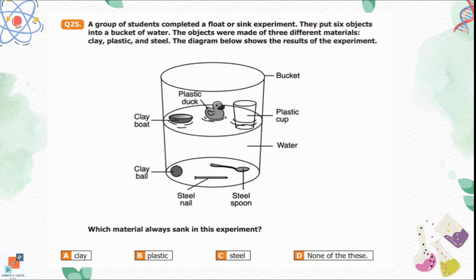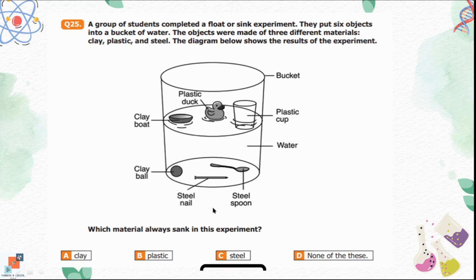Question 25: A group of students completed a float-or-sink experiment. They put six objects made of three different materials — clay, plastic, and steel — into a bucket of water. Which material always sank? Option A is clay. Option B is plastic. Option C is steel. Option D is none of these. The clay ball, steel nail, and steel spoon sank. But the plastic bucket, plastic cup, plastic duct, and clay boat stayed on the surface. Steel is the material that always sank. Option C is the correct option.